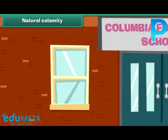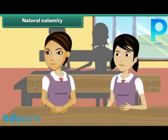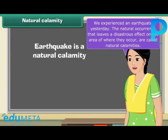Natural Calamity. The next day, Meena reached school. All the other students in class were curious about the incident. A student rushed and asked the teacher, 'I am keen to know what exactly happened yesterday.' The teacher replied, 'We experienced an earthquake yesterday. It is a natural calamity. Natural occurrences that leave a disastrous effect on the area where they occur are called natural calamities.'